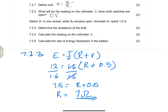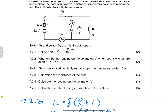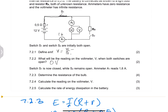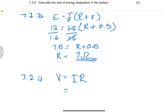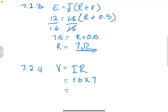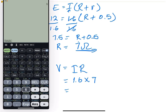Now they say: calculate the reading on voltmeter V. We're looking for the voltage across the bulb. We know the current that passes there as well as the resistance. So I can use Ohm's law: V = I × R. The current is 1.6 amps and the resistance is 7 ohms, so 1.6 × 7 gives us 11.2 volts.